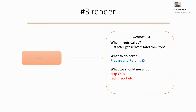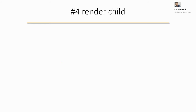Next is render, which returns JSX. This is something you should be familiar with by now because this is the method we've been using since the very first part. The render method is where you prepare and return your JSX. We've seen that with the employee component, the home component, and other components - we are preparing our JSX and returning it. What you should never do here: no HTTP calls, no setTimeout, and so on.